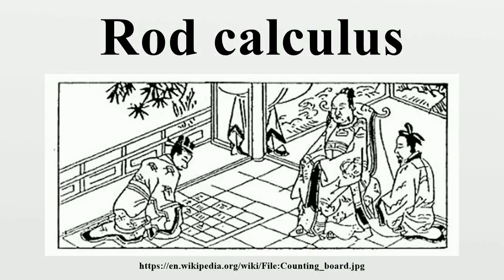Rod calculus, or rod calculation, is the mechanical method of algorithmic computation with counting rods in China, from the Warring States to Ming Dynasty, before counting rods were replaced by the more convenient and faster abacus. Rod calculus played a key role in the development of Chinese mathematics to its height in Song Dynasty and Yuan Dynasty, culminating in the invention of polynomial equations of up to four unknowns. The basic equipment for carrying out rod calculus is a bundle of counting rods and a counting board.